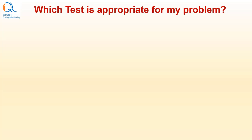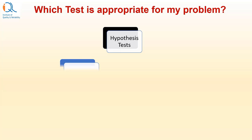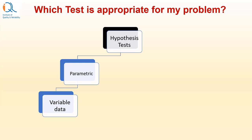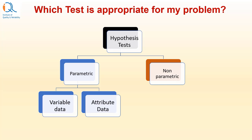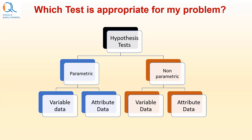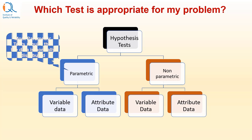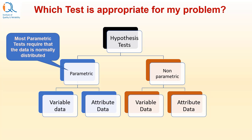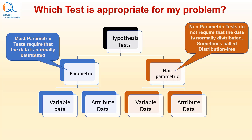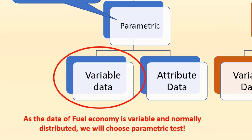Now we need to decide which test is appropriate for our problem. Hypothesis tests can be classified as parametric and non-parametric. In parametric tests we can have variable data and attribute data; similarly for non-parametric tests. Most parametric tests require that the data is normally distributed, while non-parametric tests do not — sometimes called distribution-free tests. As the data of fuel economy in our example is of variable type and is normally distributed, we will choose a parametric test.